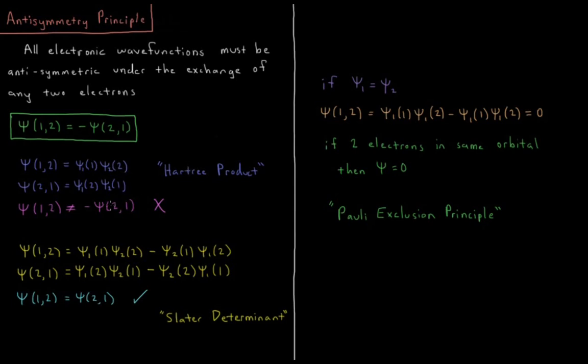Now we have a problem with this because if you switch all the labels here, move electron1 to electron2 and vice versa, Psi1 equals Psi1 of 2 and Psi2 of 1. Now electron2 is in orbital 1 and electron1 is in orbital 2. So did the wave function switch signs here? The answer is no, Psi1 is not equal to minus Psi1. So the Antisymmetry Principle says this cannot be a valid wave function. A Hartree product alone cannot be a valid wave function for an atom with multiple electrons.